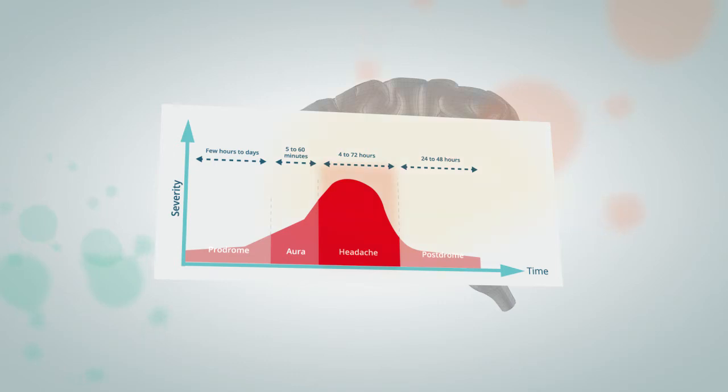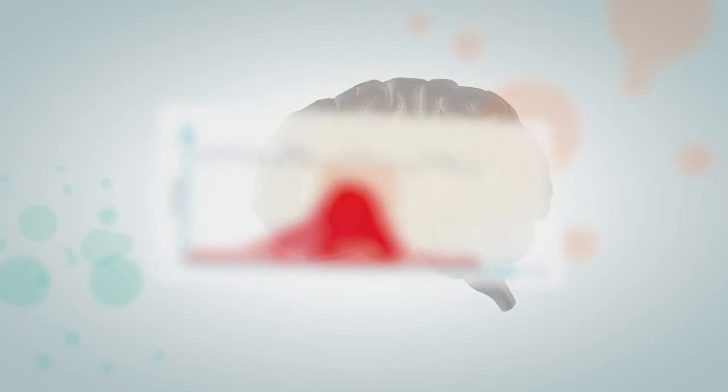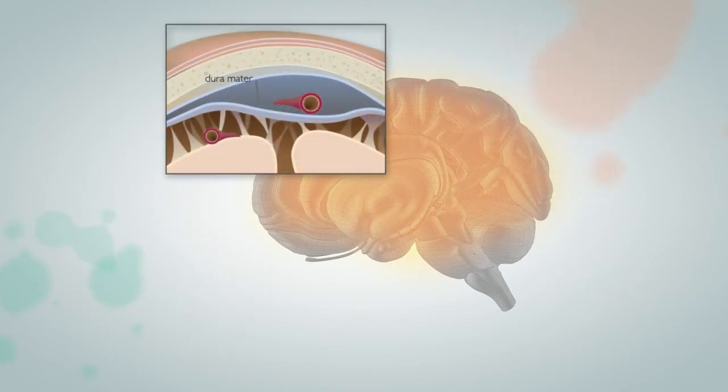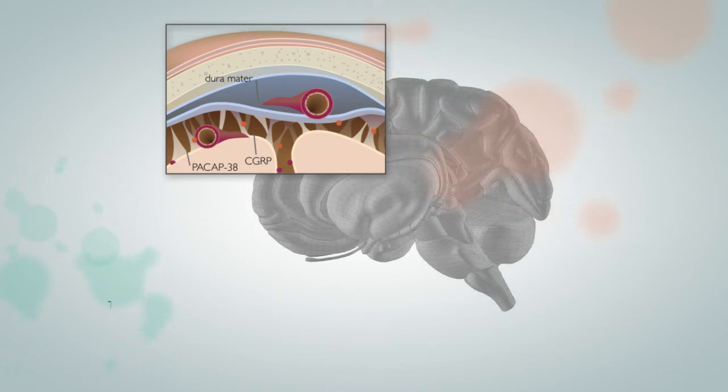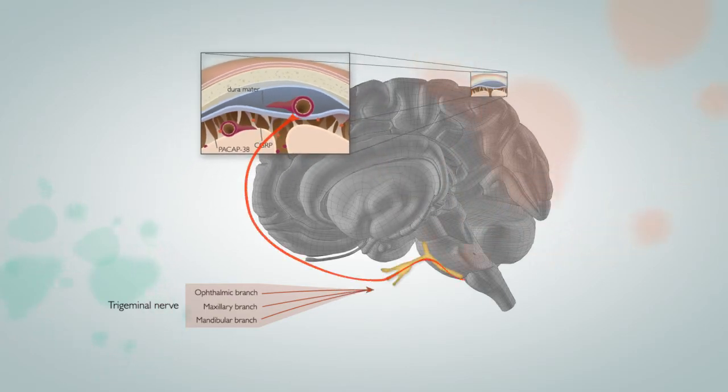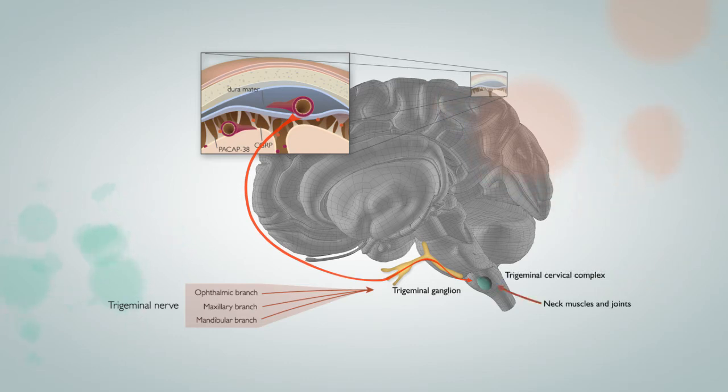The characteristic throbbing pain of migraine is widely accepted to be the result of trigeminovascular pathway activation. It begins when nociceptive neurons are stimulated and release vasoactive neuropeptides causing vasodilation of large cerebral arteries. Alongside input from the trigeminal nerve, this stimulates trigeminal neurons in an axon-like reflex which converges with inputs from adjacent skin and muscle to trigger the trigeminal cervical complex.